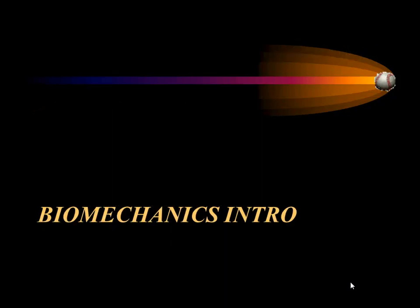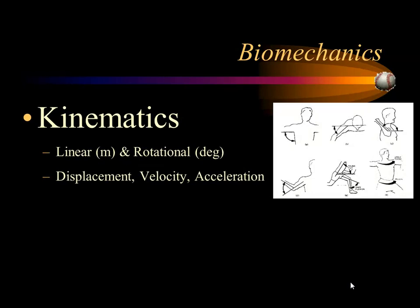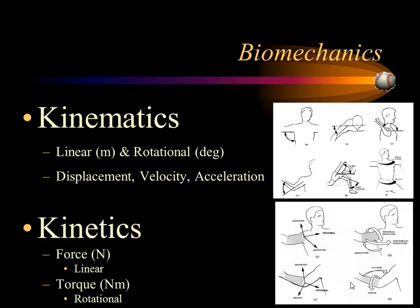So a little bit about the biomechanics of the elbow, or just biomechanics in general. There are really two different aspects to biomechanics. We look at kinematics, which are all the motions — both the linear and rotational motions — and there's kinetics, which are the forces: the linear forces and then the torques, which are the rotational components.